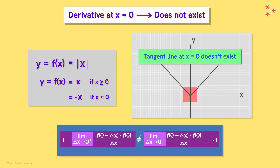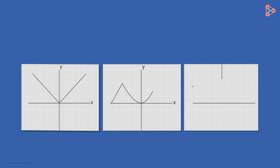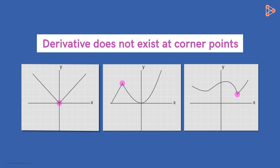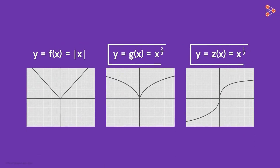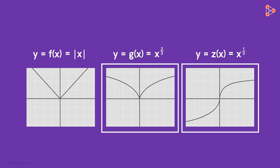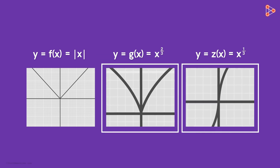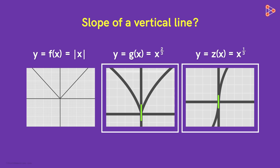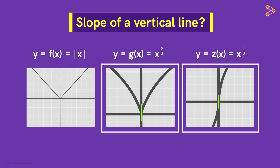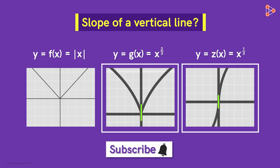There is no special significance to the value X equal to zero here. In a graph for any function, a corner can occur at any value of X. So if we encounter corners like this, we can be sure that the derivative of the function at that corner point does not exist. Now what about the other two functions mentioned in the beginning? We can see that in those two cases, if we zoom in enough, the curve looks almost like a vertical line. So what is the slope of a vertical line? Share your thoughts in the comment section below, and we shall see what it means in the next lesson. Stay updated by subscribing to our channel.